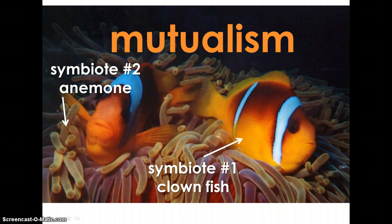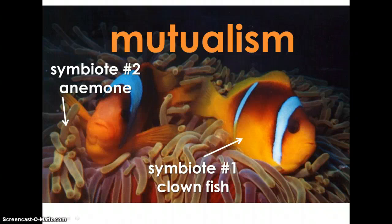In this first example of symbiosis, we have mutualism. Symbiote number one is the clownfish, and symbiote number two is the anemone. The clownfish is benefiting because it has a protected place to live — sea anemones have stinging cells on their tentacles, which do not affect the clownfish. The anemone is also benefiting because the clownfish may lure food toward it and serve as free housekeeping by cleaning tentacles and removing dead ones.